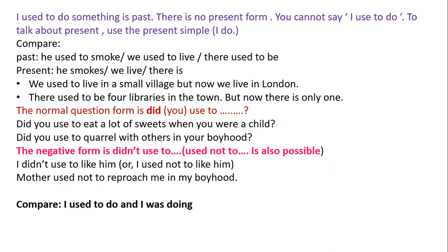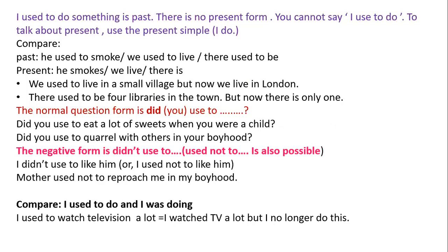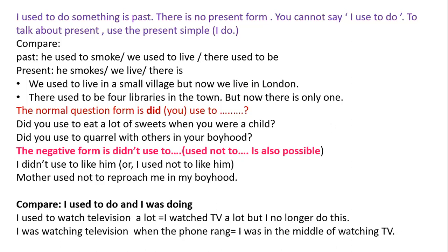Now let's compare 'I used to do' and 'I was doing'. 'I was watching television' and 'I was playing football' describe actions in progress. 'I used to watch television a lot' means I watched TV regularly in the past but no longer do. 'I was watching television when the phone rang' means I was in the middle of watching TV at that moment.